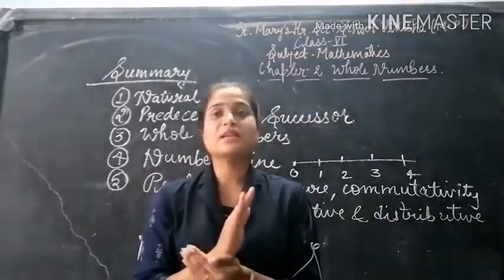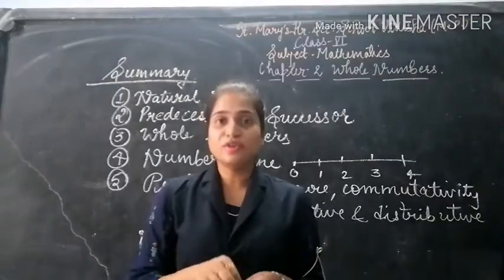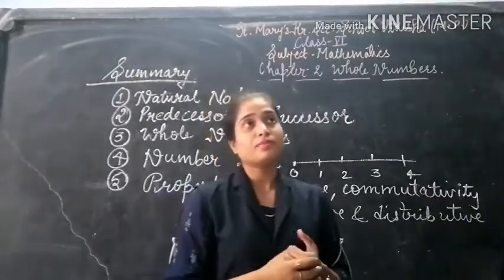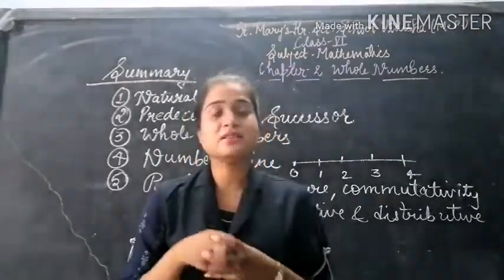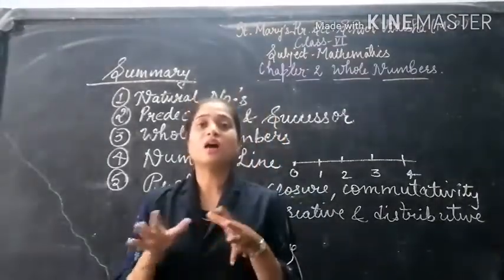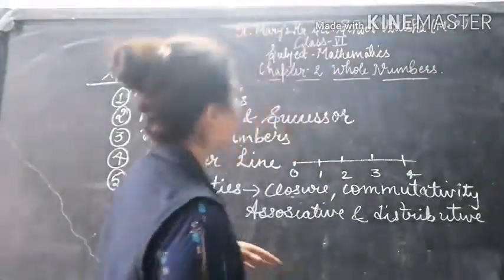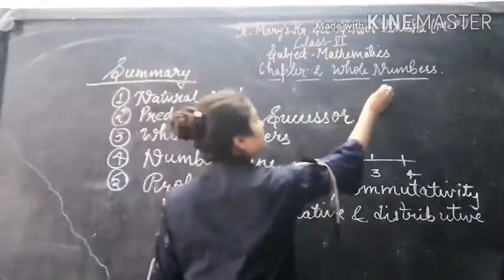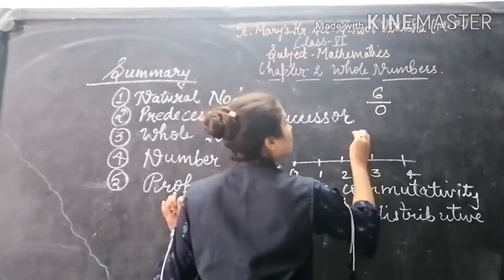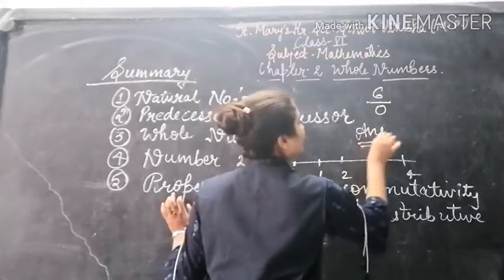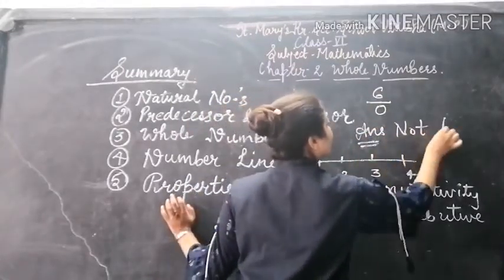Whereas whole numbers are not closed under subtraction and under division. And if any number is divided by 0, then the answer is not defined. Suppose the number is 6; 6 divided by 0 gives an answer that is not defined.